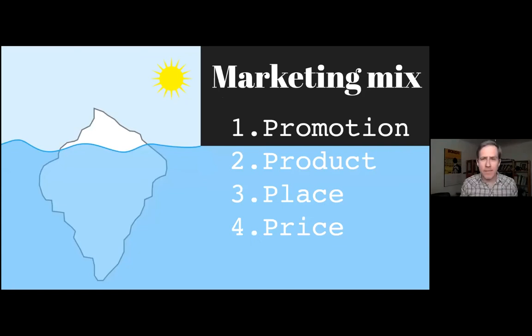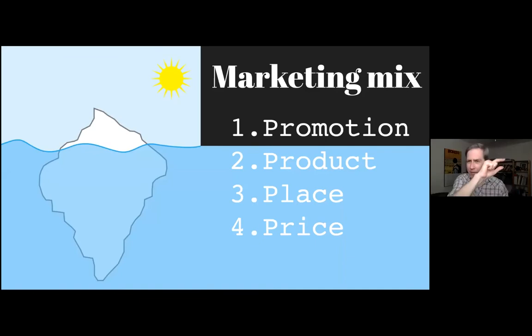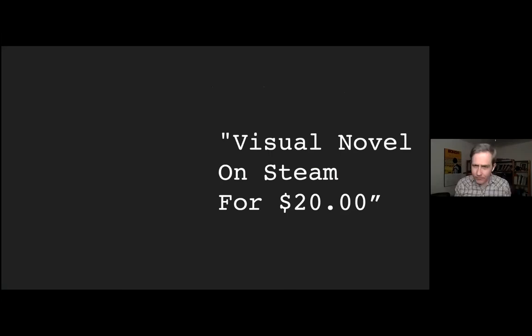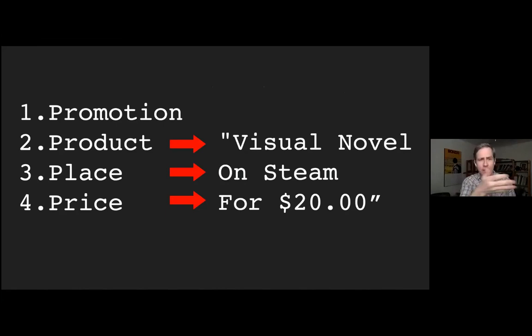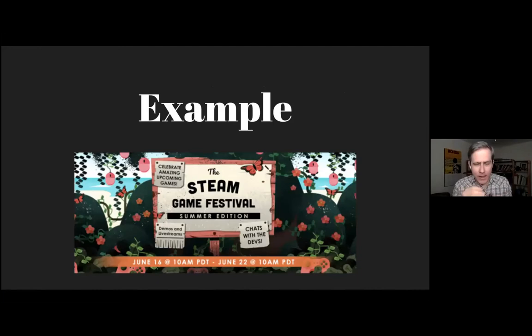Promotion — like how many emojis to use — is very tip of the iceberg. What matters most are the bottom three: product, place, and price. Product is like, 'I'm making a visual novel.' Place is, 'I'm making it on Steam.' Price is, 'for $20.' Those decisions are the most important. I study Steam and during the Summer Game Festival — where developers put up demos and people can wishlist them — I reached out to developers asking how many wishlists they got. I averaged wishlists across all different genres.